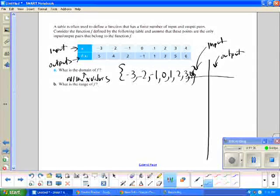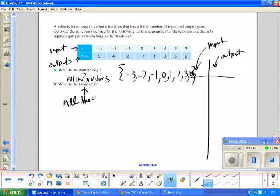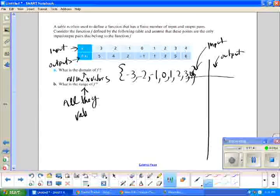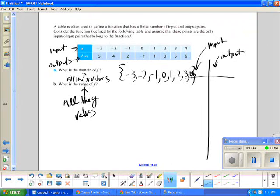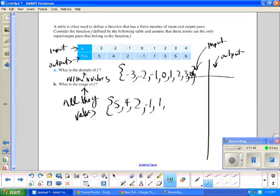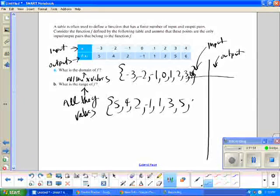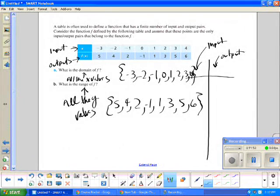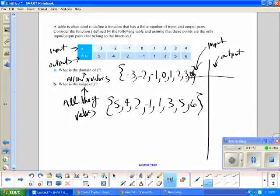The range, this is referring to all the Y values. And in this case, 5, 4, 2, negative 1, 1, 3, 5, 6. I do not care that these are not really perfectly in ascending order. Of course, Compass might care, but I don't care. So you can put them any way that you want to put them. That should work.